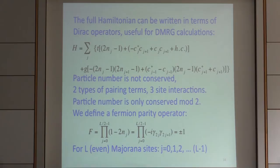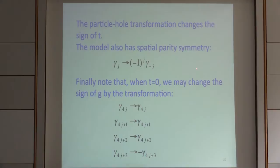Like in most superconductor models, particle number is conserved modulo two. The Hilbert space breaks up into sectors with either even or odd number of fermions — we call this fermion parity. We can define a fermion parity operator which is plus or minus one on all lattice sites, and we classify states of the Hamiltonian by their fermion parity. There's also a spatial parity symmetry, and when t is zero, we can change the sign of every fourth Majorana, which changes the sign of g.